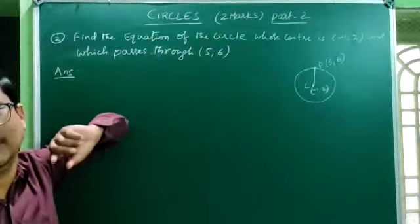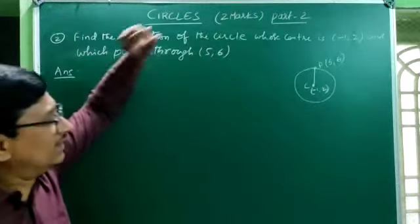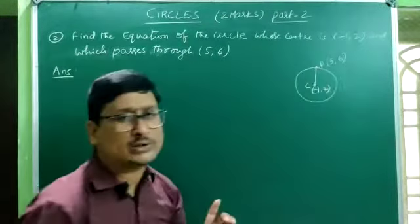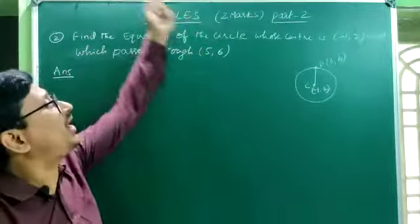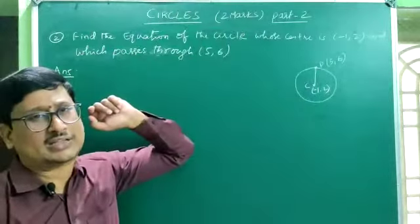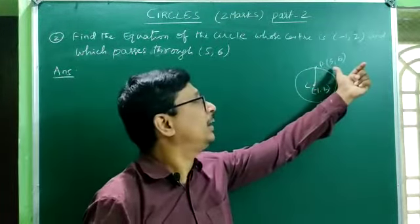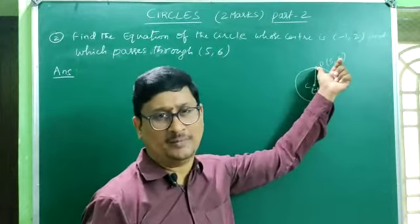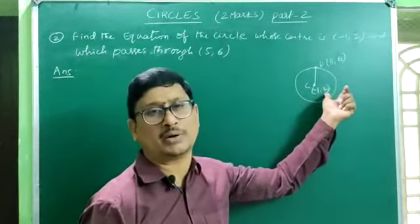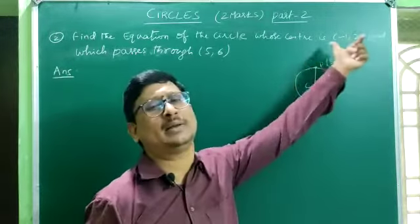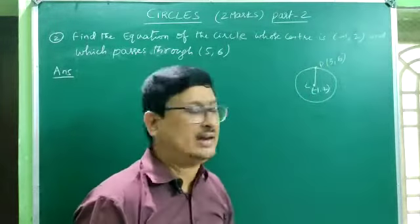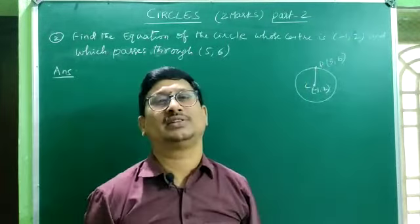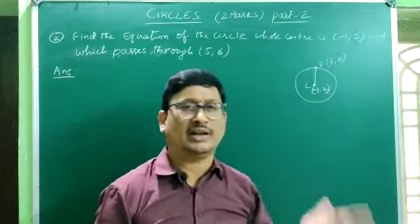The center is given as (−1, 2) and the circle passes through the point (5, 6). Let P = (5, 6). P lies on the circle. Joining the center and the point on the circle gives the radius. Once we know the center and radius, we can find the equation of the circle.